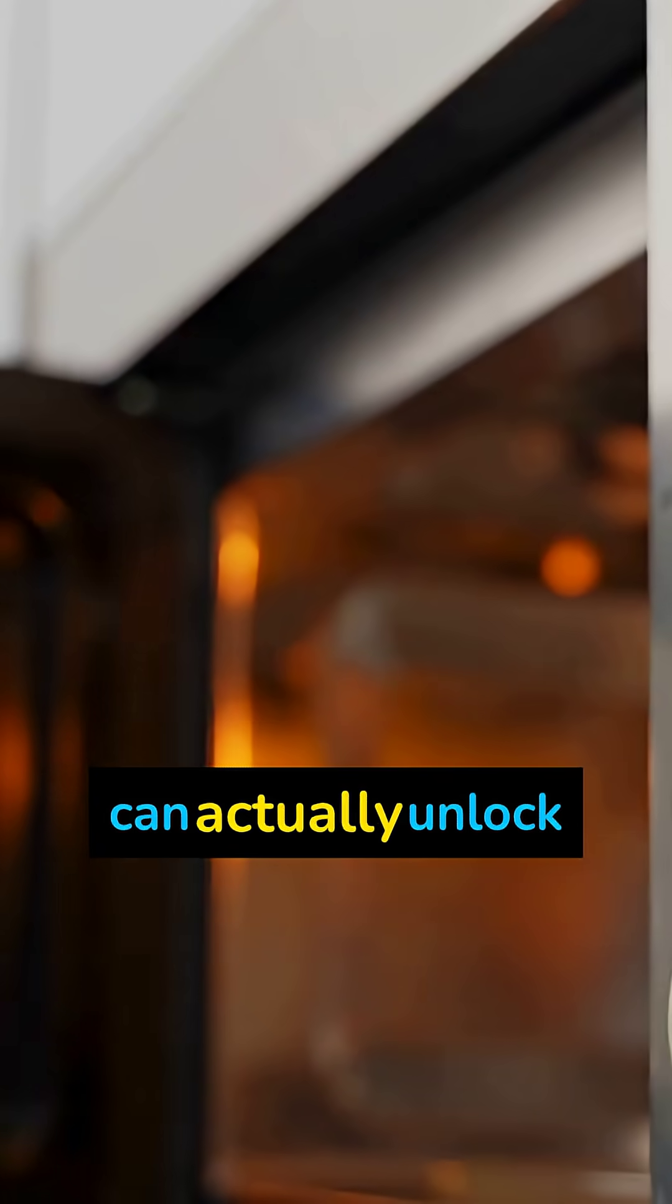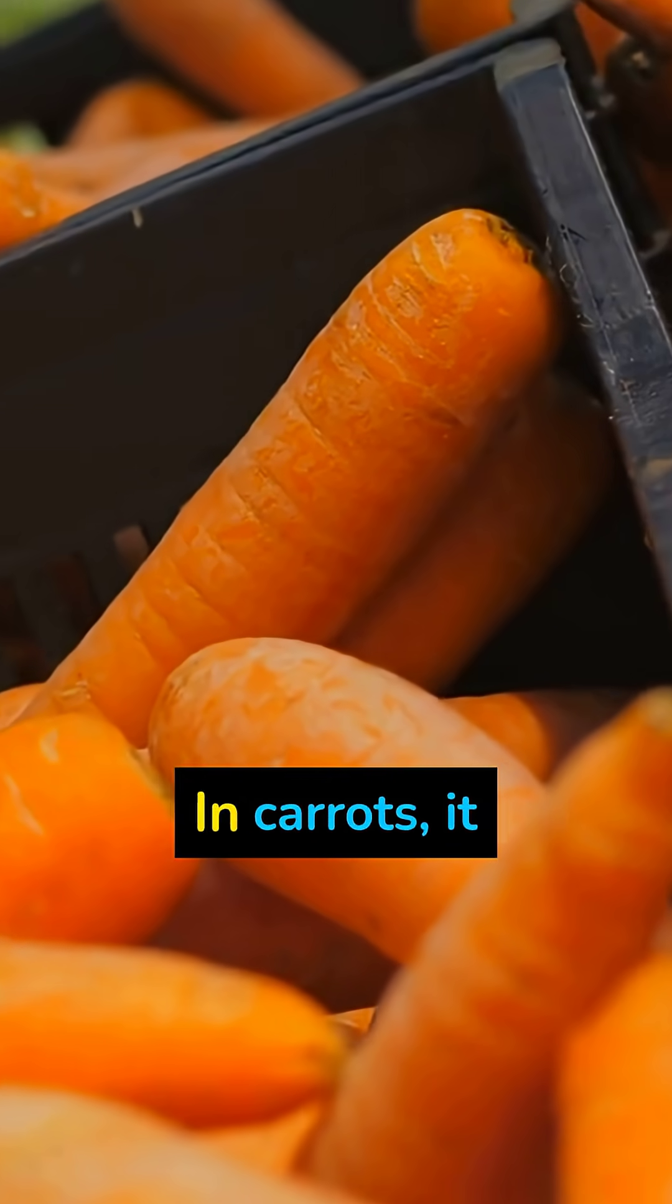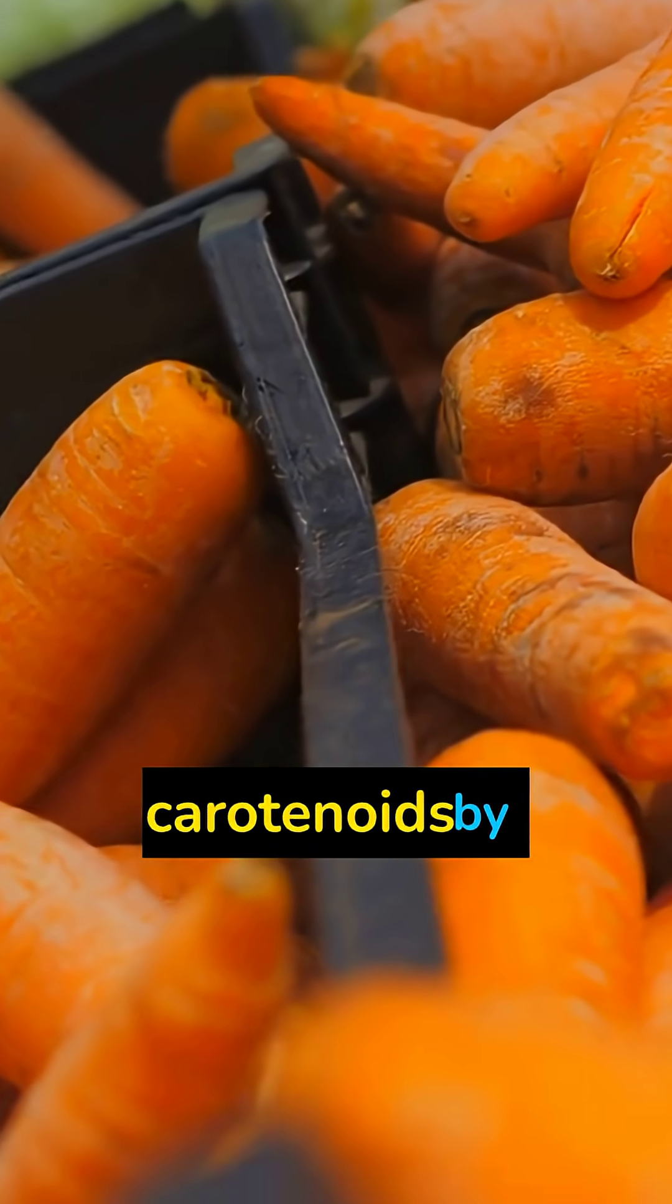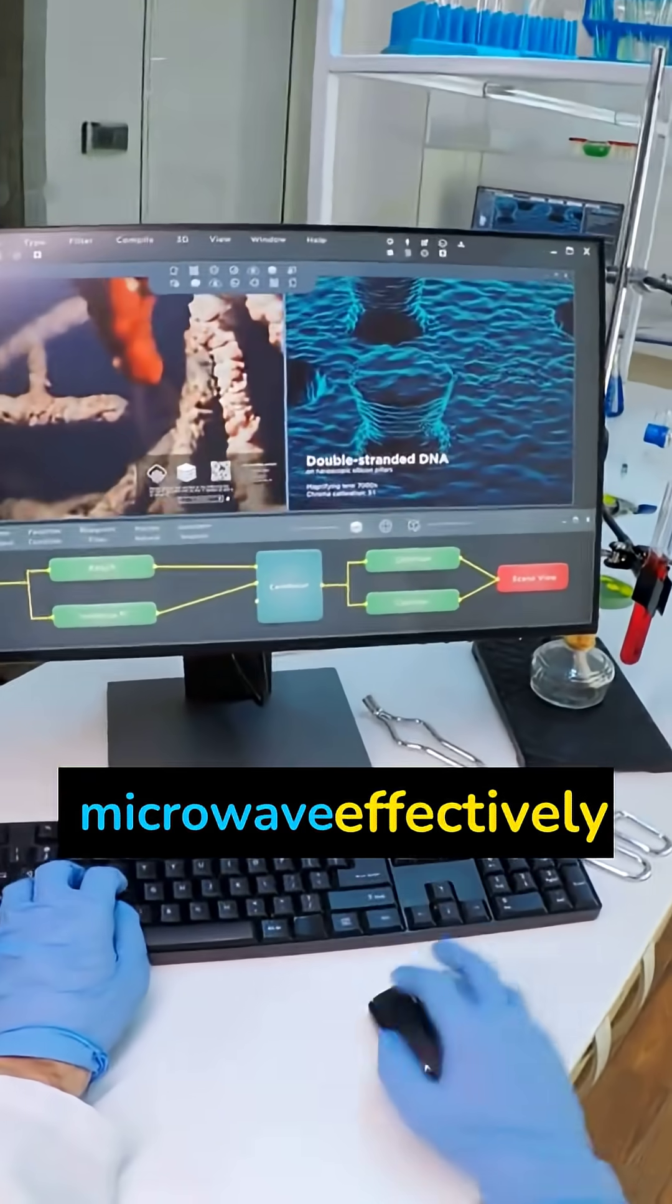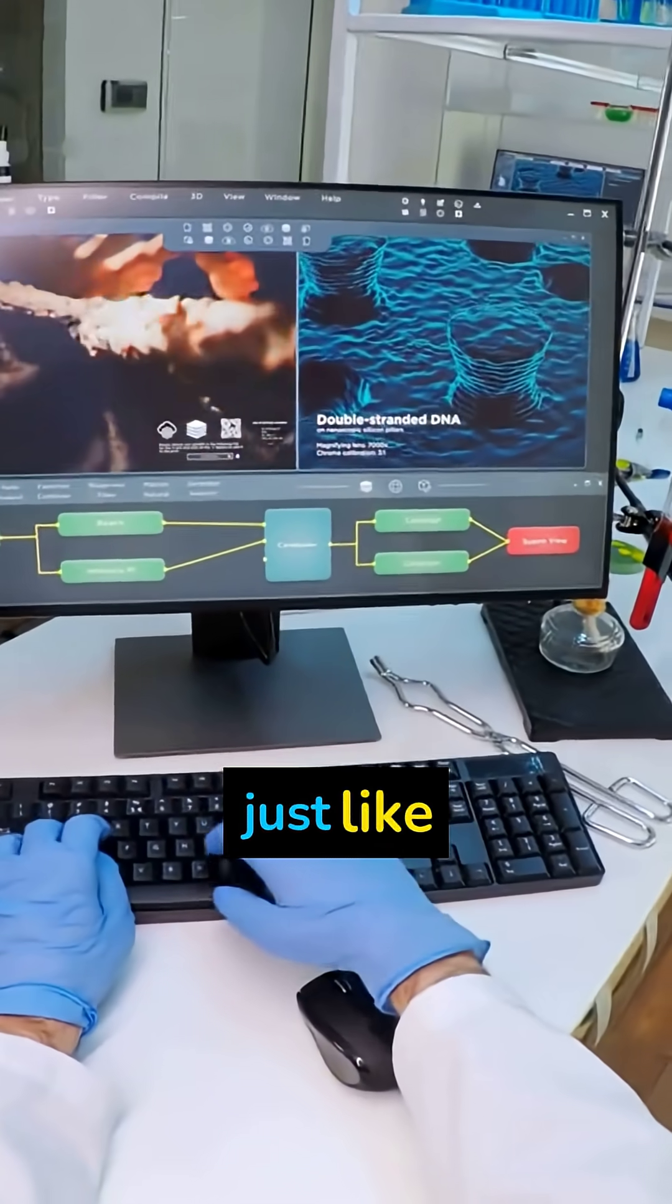Ready for the opposite? Science shows microwaves can actually unlock nutrients. In carrots, it can increase available carotenoids by 107%. The heat from the microwave effectively kills bacteria, just like other cooking methods.